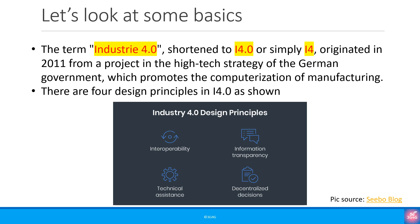Information transparency is the ability of Industry 4.0 to provide operators with vast amounts of useful information needed to make appropriate decisions. At the same time, interconnectivity allows operators to collect immense amounts of data from all points in the manufacturing process, thus aiding functionality and identifying key areas that can benefit from innovation and improvement.